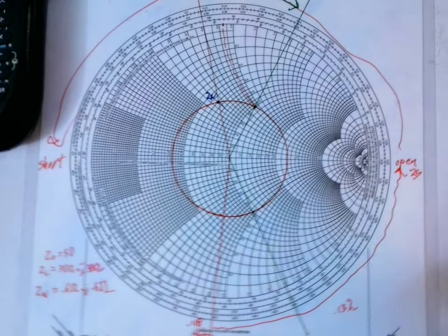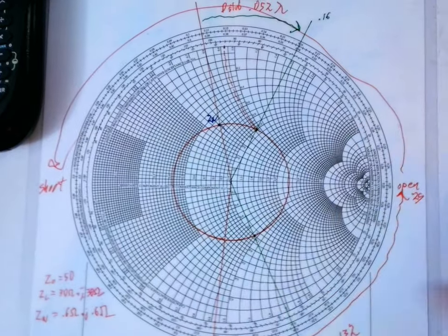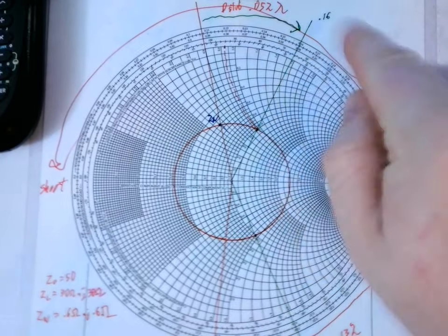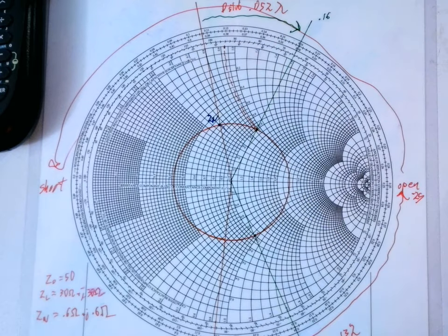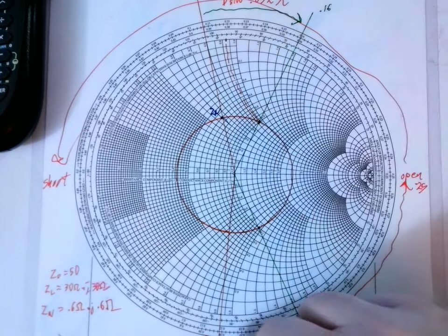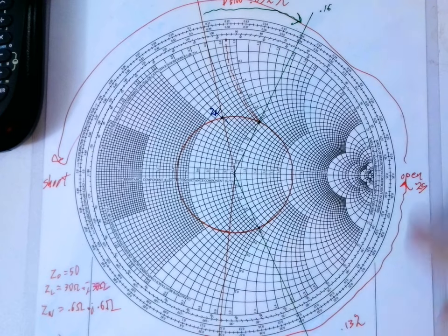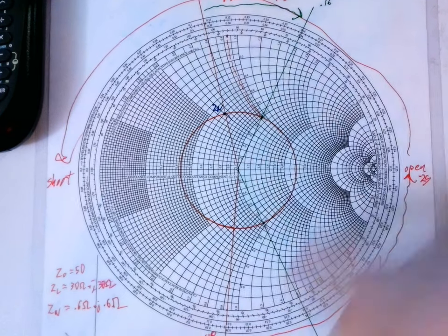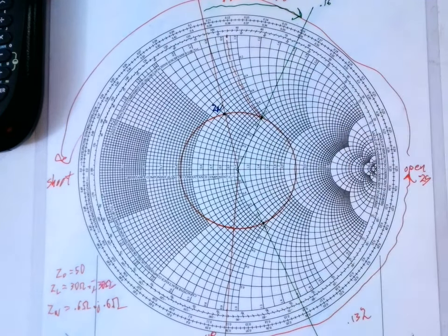So, for series, recap: Draw your Zn. Draw these two lines. Go from there to there. That's your distance of the stub. And then, find the reactance. Find that same point. And from there to here is open. And from there to here is short.